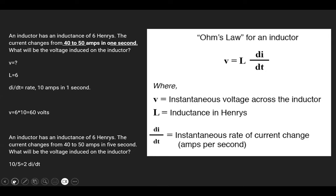This equation is Ohm's law for an inductor: V equals L times di/dt. V is the instantaneous voltage — the voltage at a specific point in time, similar to instantaneous velocity. You can calculate the instantaneous voltage across the inductor by multiplying your inductance by the instantaneous rate of current change.